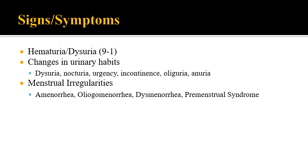Other menstrual irregularities include oligomenorrhea, which is only three to six cycles per year with very long cycles, and dysmenorrhea, which involves significant pain associated with menstruation, as well as premenstrual syndrome. Hypertension is another thing to note because of its connection to the kidneys — if someone has hypertension, you'd be concerned about possible kidney damage, and you can also look at the kidneys as a possible source of the hypertension.